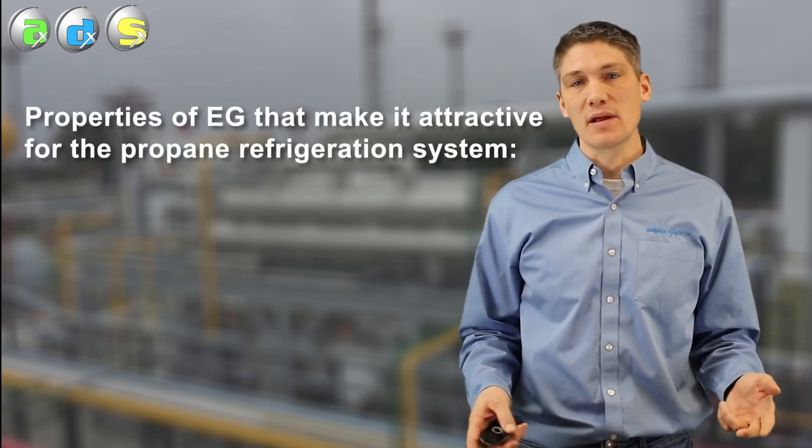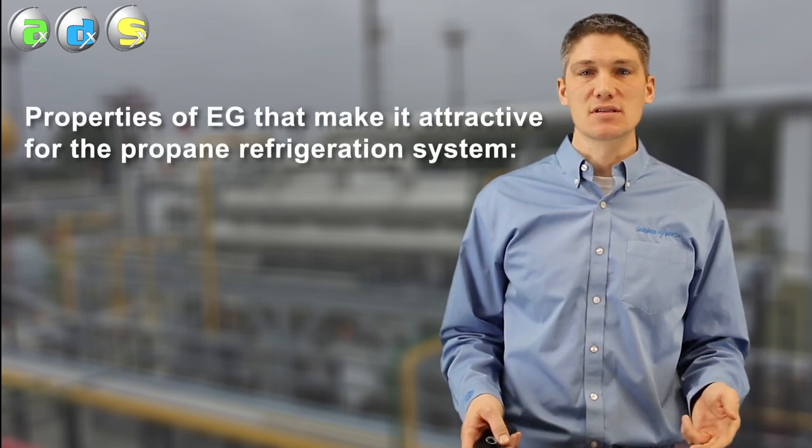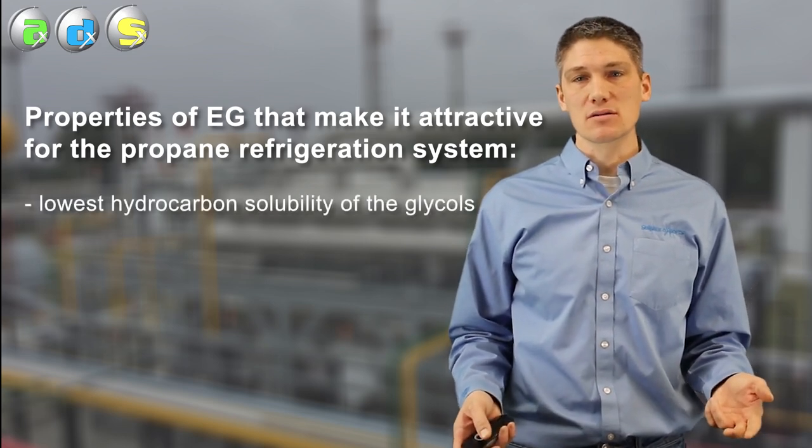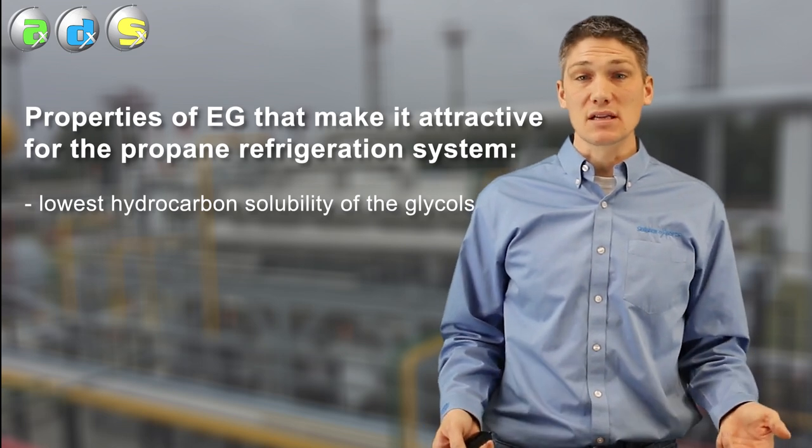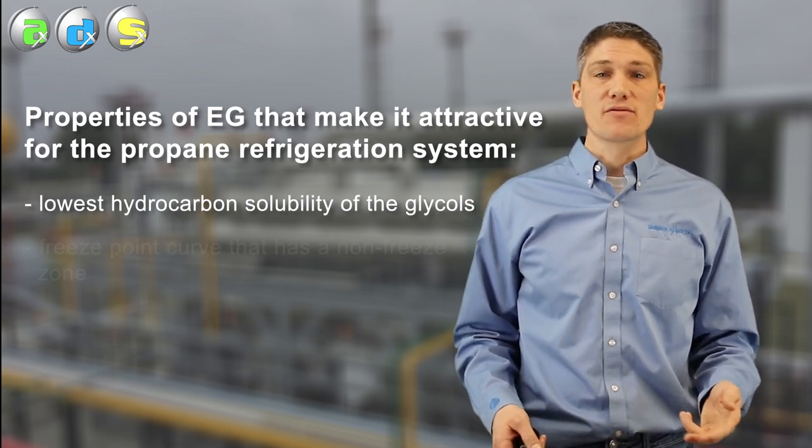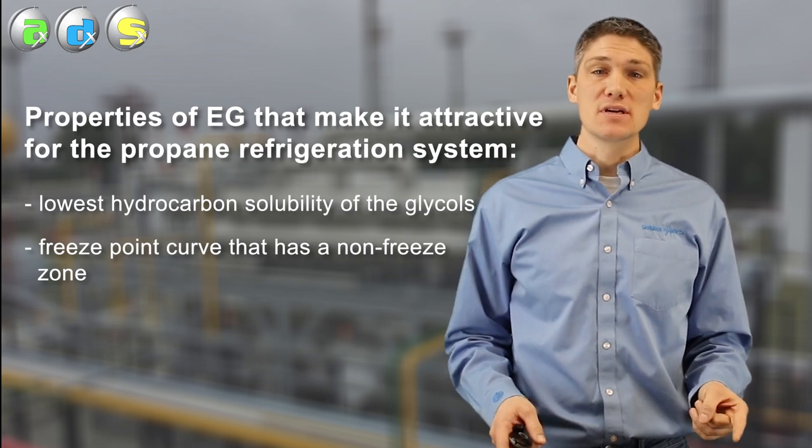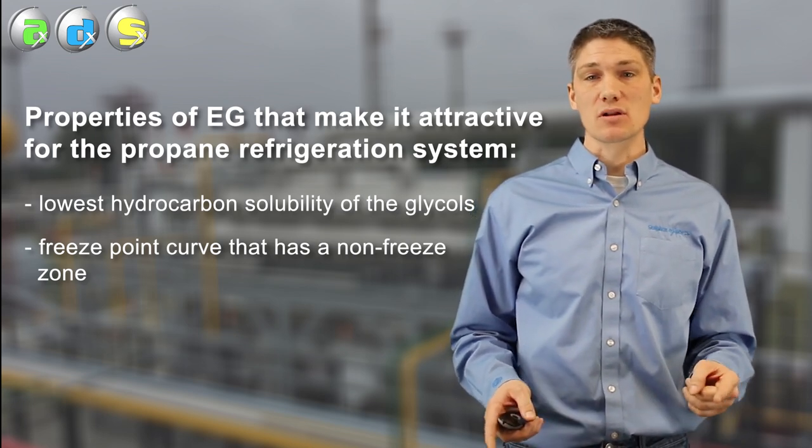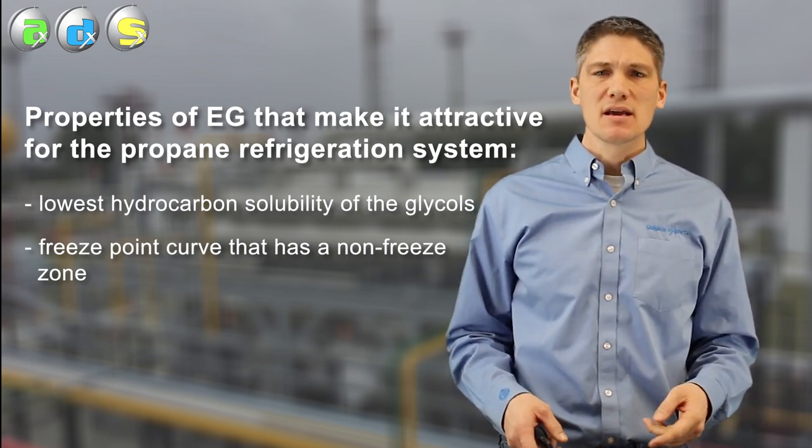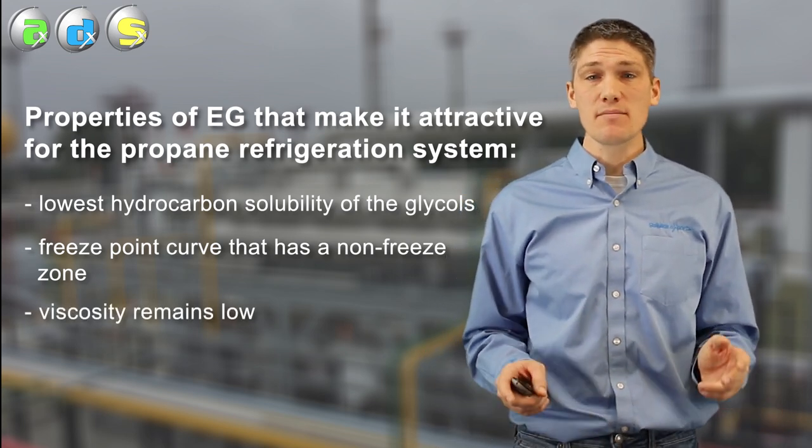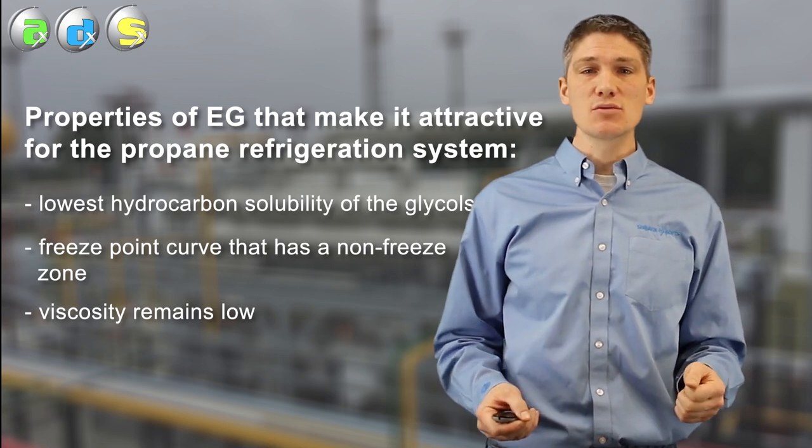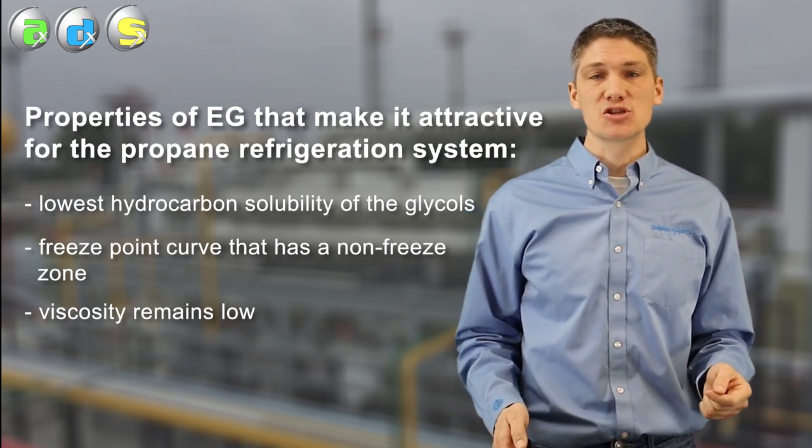Now let's highlight some properties of the EG that make it attractive for the propane refrigeration process. First it has the lowest hydrocarbon solubility of the glycols so separation phases in the LTS are more easily achieved. Also it has a freeze point curve that has a no freeze zone to target for your lean and rich glycol strengths. And lastly its viscosity remains low enough it can be injected through a nozzle to produce a fine mist that can travel freely into the various tube sheets in the exchangers.